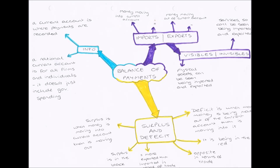Welcome to this macroeconomic video on the balance of payments. In the top left we have our information section. The first thing you need to know is that a current account is where all payments are recorded — where the payment of money, wealth, and value in and out is recorded. A great example would be your personal bank account. So a national current account is where payments for everything in the British economy are recorded.